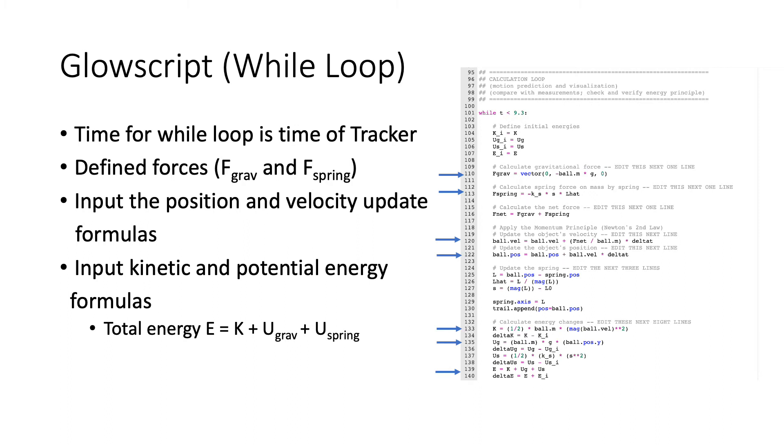I had to input the position and velocity update formulas in lines 120 and 122 to estimate the position of the movement for the Glowscript equation. I also input the kinetic and potential energy formulas that I had earlier, re-inputting them to work in the while loop in lines 133 through 140.